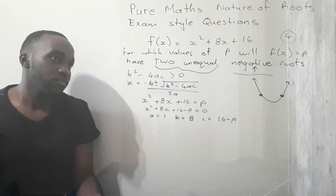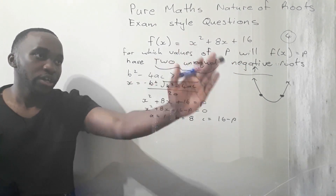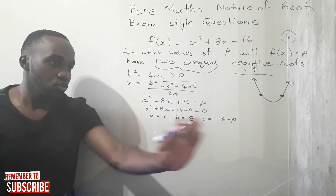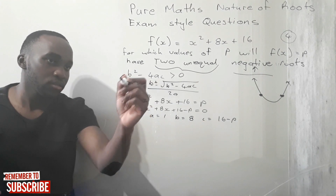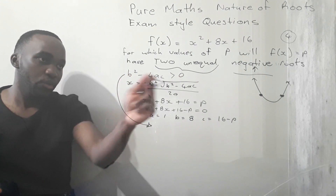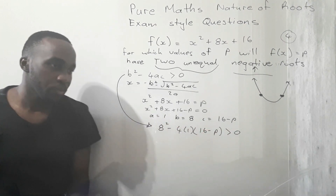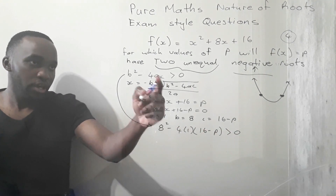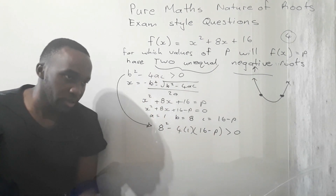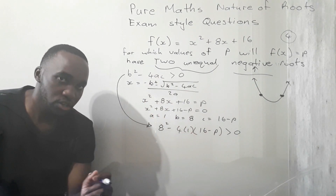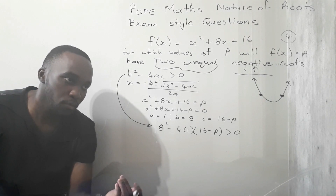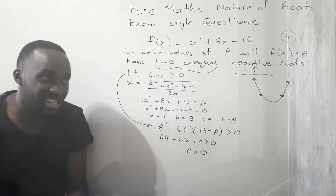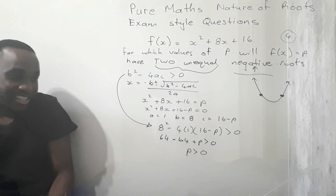Before worrying about the negative roots condition, let's work out where we have unequal roots. To do that we solve where delta is bigger than zero. With b = 8, a = 1, and c = 16 − p, we solve that inequality and make p the subject. The result is that p must be bigger than zero.